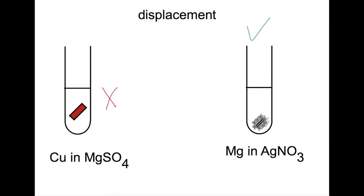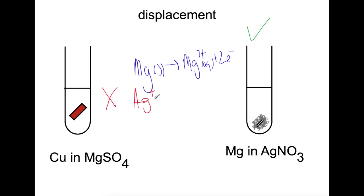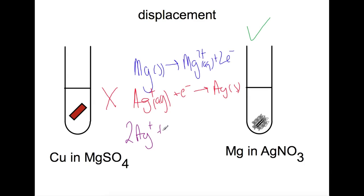This is because the magnesium will oxidize. The magnesium solid will become magnesium ions in solution, losing two electrons. The silver ions that were originally in solution will gain these electrons to form a silver solid. We can combine these two equations to form a redox equation. We need the electrons to balance so we have to multiply the silver equation by two first. This means that two silver ions will react with one magnesium atom to form two silver atoms plus one magnesium ion. The nitrate ions are spectator ions in this reaction.